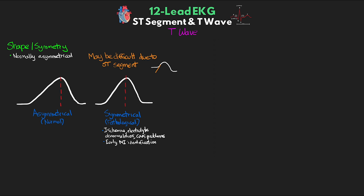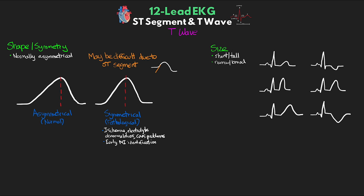Along with shape and symmetry, we also want to look at the size of the T waves — things like short and tall as well as narrow and broad. Tall narrow T waves are common with hyperkalemia, while broad T waves can be present with various CNS problems. Here are a few examples: asymmetrical waves both positive and negative, tall peaked T waves, tall and broad T waves, and very broad T waves — think CNS — both positive and negative. Generally, we don't expect to see the T wave more than two-thirds of the height or depth of the QRS complex; that would be considered abnormal.